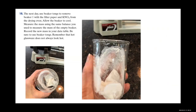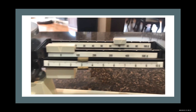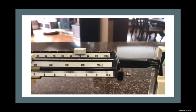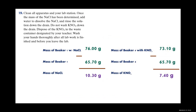The next day we pulled beaker 4 — with the filter paper and potassium nitrate — from the oven, allowed it to cool, placed it on the triple beam balance, recorded the mass, and entered it in our data table. Our mass was 73.10 grams. We also grabbed screenshots for our temperature readings from both the first and second cooling and filtration steps.